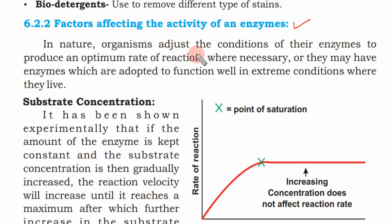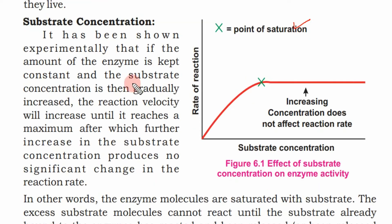In nature, organisms adjust the conditions of the enzymes to produce an optimum rate of reaction where necessary, or they may have enzymes which are adapted to function well in extreme conditions where they live. All living organisms arrange their internal conditions so that their enzymes can work better, even in extreme heat or cold.